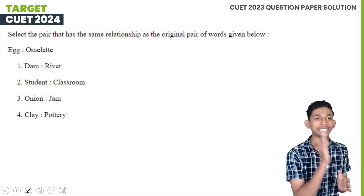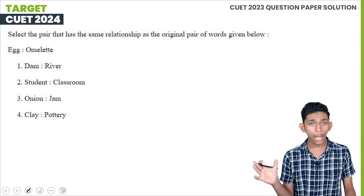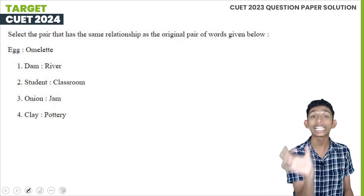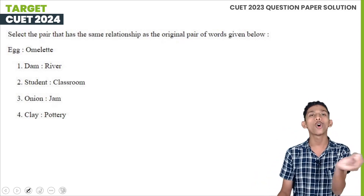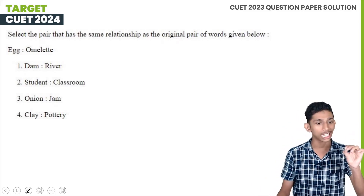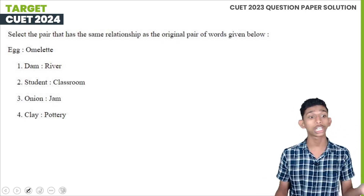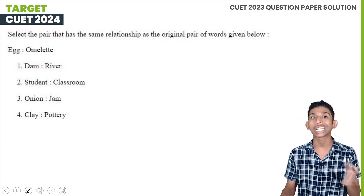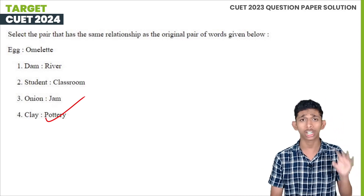The next question asks for a pair that has the same relationship as the original pair. The given analogy is egg to omelette — a raw material produces a product. Among the options, dam to river has the same relationship. The answer is option 4. It's very easy to mark.